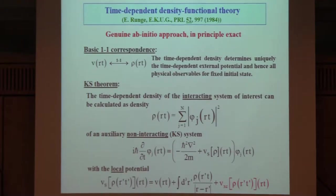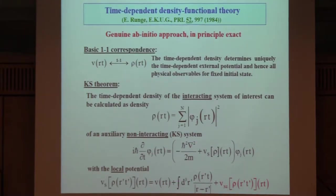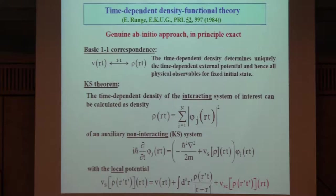You propagate in time a single-particle Schrödinger equation and the density is obtained from these orbitals. The effective potential in this Schrödinger equation contains a Hartree part and an exchange-correlation part, which is a functional of the density. This approach is completely parameter-free—no parameters on the system that you want to calculate enter except for the charges and the positions of the nuclei.